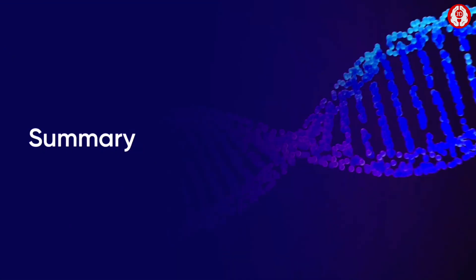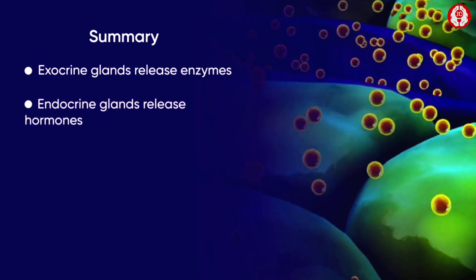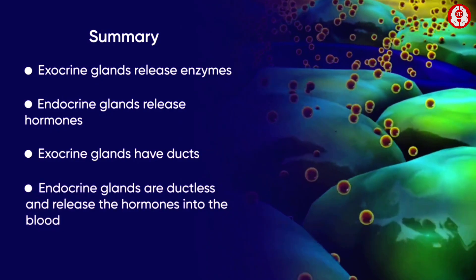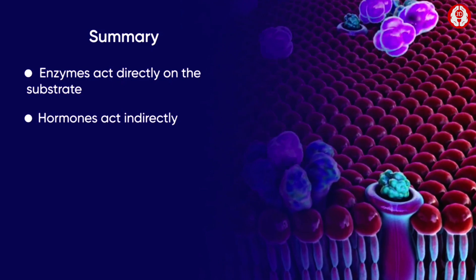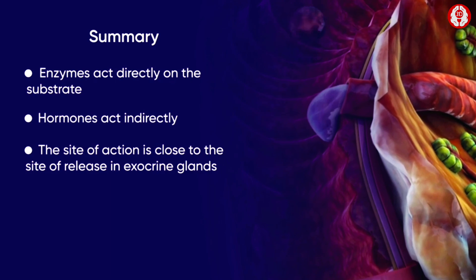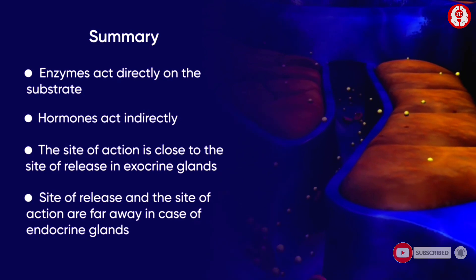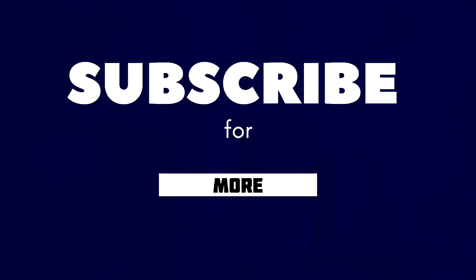To summarize: exocrine glands release enzymes while endocrine glands release hormones. Exocrine glands have ducts while endocrine glands are ductless and release hormones into the blood. Enzymes act directly on the substrate while hormones act indirectly. In the exocrine gland, the site of action is close to the site of release, while in the endocrine gland, the site of release and the site of action are far away.